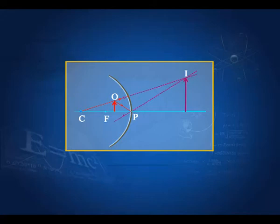Here is the object — the red one — and we have a ray from the center of curvature which goes undeviated. Then we have a ray which falls on the mirror at P and gets reflected according to the laws of reflection. These two rays appear to converge and meet at point I, which is the image of O. This image is formed behind the mirror — it is a virtual image, erect and magnified.